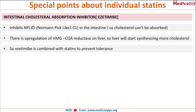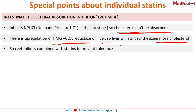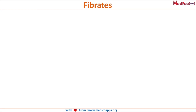The intestinal cholesterol absorption inhibitor is ezetimibe. It inhibits NPC1L1 (Niemann-Pick C1-Like 1) in the intestine, thereby inhibiting absorption of cholesterol. However, there is upregulation of HMG-CoA reductase in the liver as an adverse effect, meaning the liver starts synthesizing more cholesterol. To prevent this tolerance, ezetimibe should always be combined with statins.